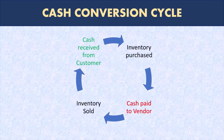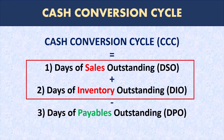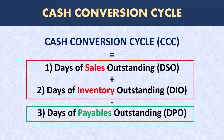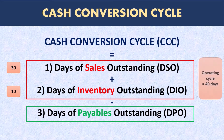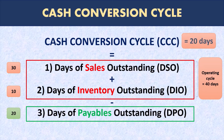So cash conversion cycle is the difference between the time it takes to pay for buying the inventory and the time it takes to collect money after holding and selling the inventory. This is why the formula is DSO plus DIO — the days to hold inventory and collect cash from sales — minus DPO, the days available to a business before it must pay. A simple example: if a business holds inventory on average for 10 days before it's sold, and after the sale customers on average take 30 days to pay, then the operating cycle is DSO plus DIO which is 30 plus 10 equaling 40 days. If the company takes 20 days to pay for the inventory to its vendor, then the cash conversion cycle is 20 days, which is 40 minus 20.